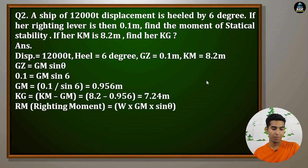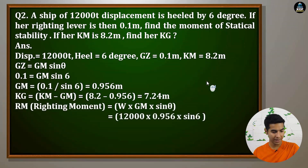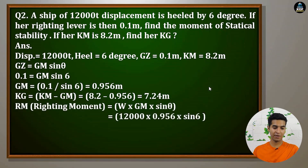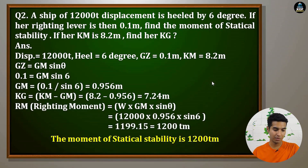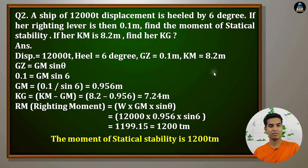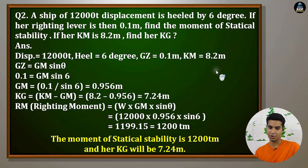Now the righting moment: RM = displacement × GM × sin θ = 12,000 × 0.956 × sin 6° = 1,199.15 ≈ 1,200 ton-meters. So the moment of statical stability is 1,200 Tm and her KG is 7.24 meters.